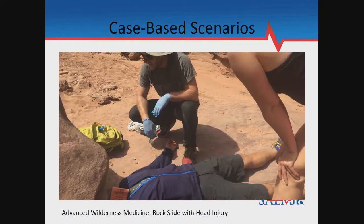The course is structured so the first week is in a mountainous environment — we have the beauty of being in the Rocky Mountains. The second week we go to Moab and play in the desert, doing different scenarios based on the environment. We do a mass casualty scenario with a rock slide, and that's a not-very-well-built sea collar out of a Sam splint there in the corner.